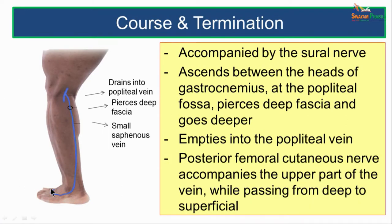The small saphenous vein begins from the lateral end of the dorsal venous arch, moves posterior to the lateral malleolus, and ascends on the posterior aspect of the leg. It reaches the upper part of the leg accompanied by the sural nerve. It then ascends between the two heads of gastrocnemius, and at the popliteal fossa, it pierces the deep fascia and goes deeper to empty into the popliteal vein. The posterior femoral cutaneous nerve accompanies the upper part of the small saphenous vein while passing from deep to superficial aspect.